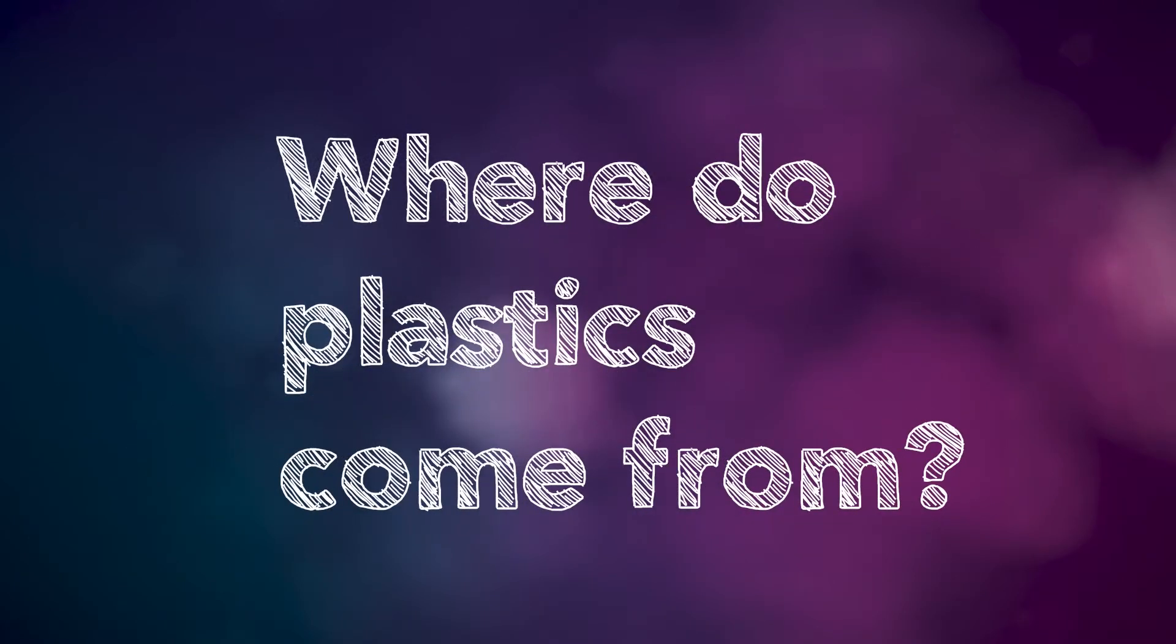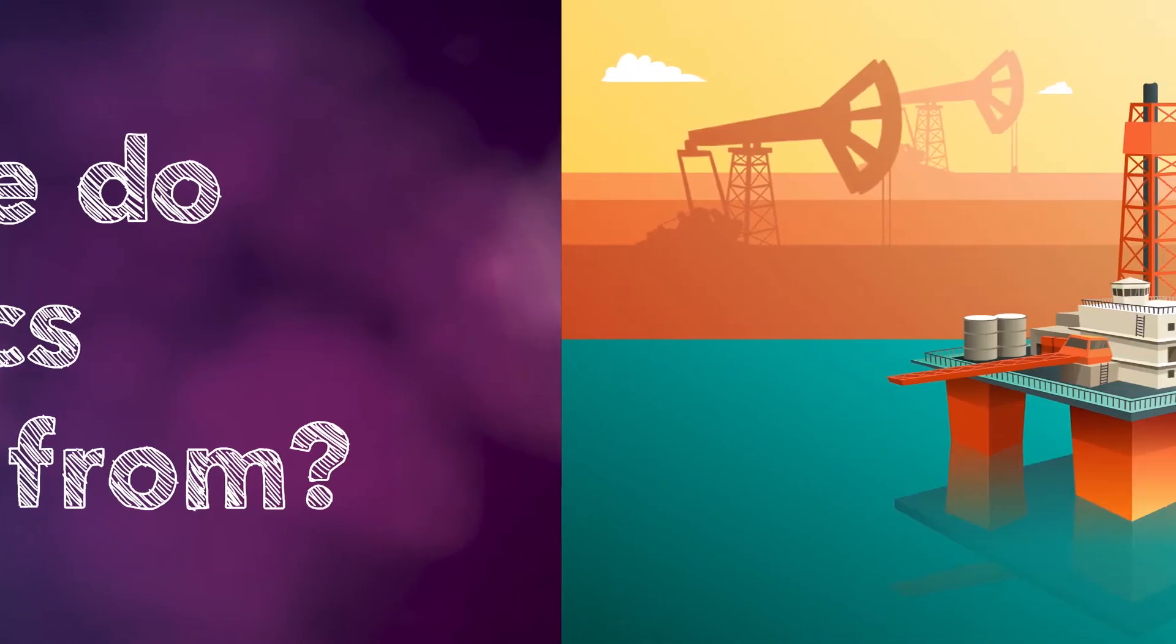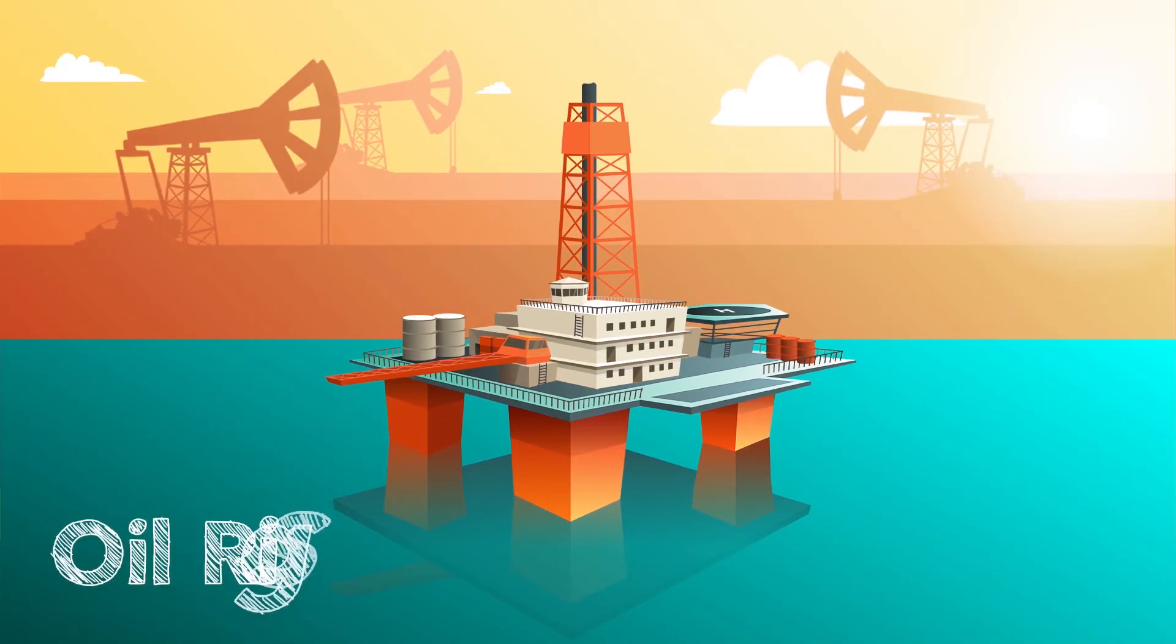So who knows where the main ingredients for almost all of the currently used plastics comes from? It comes from crude oil pumped out of the earth's crust from oil rigs in the sea and oil wells on land.